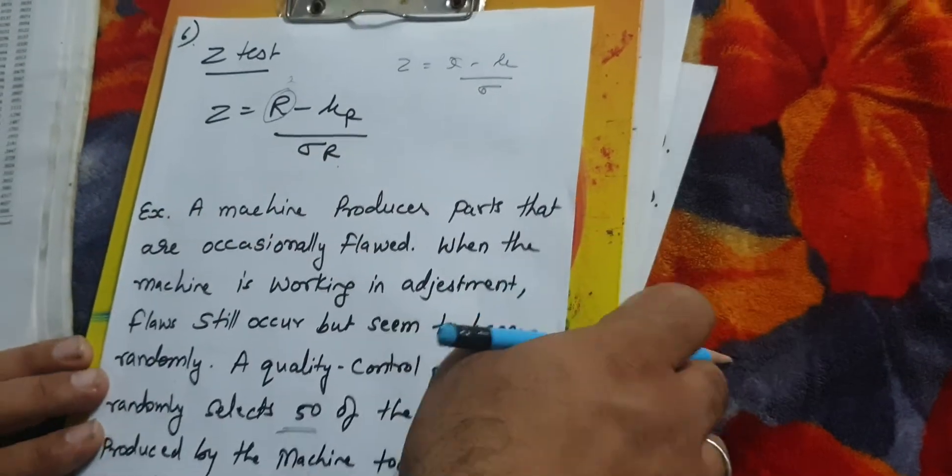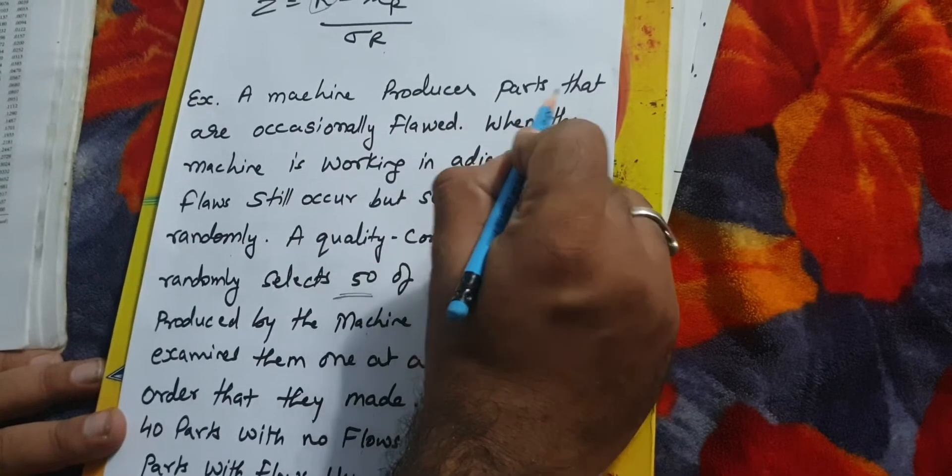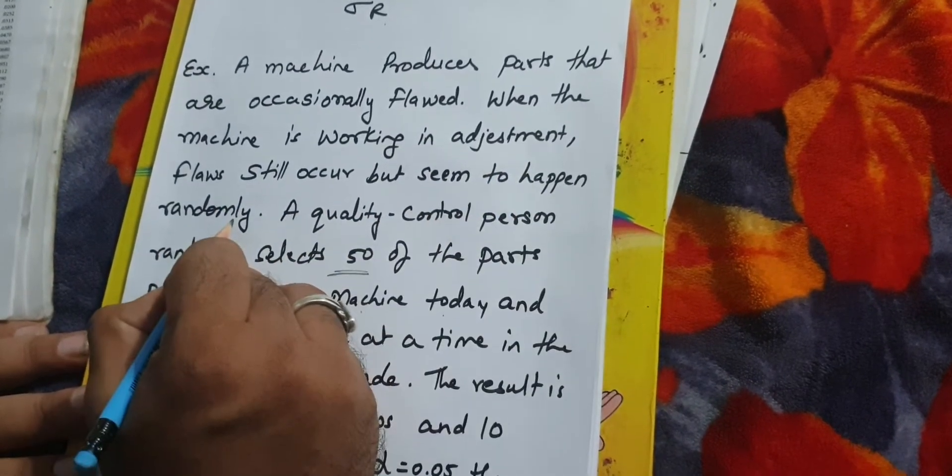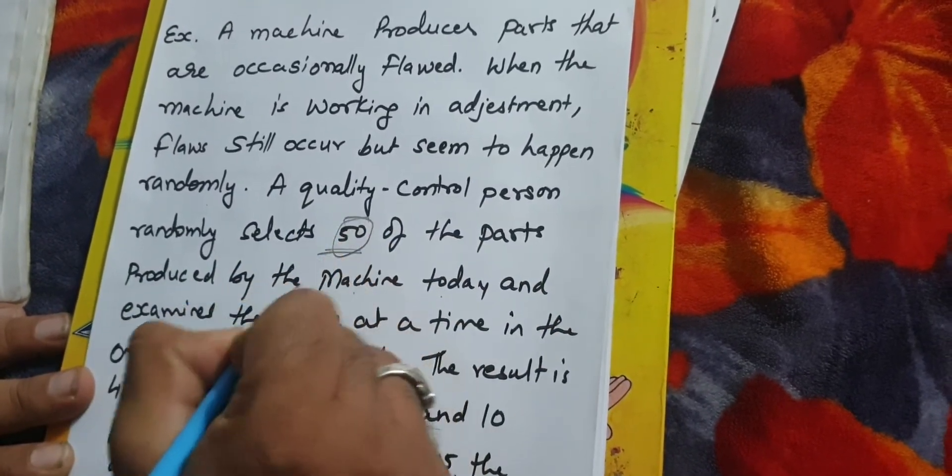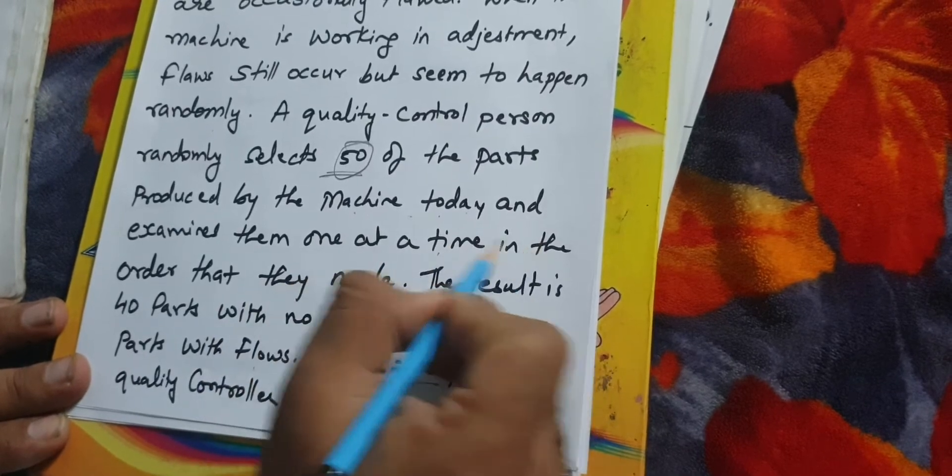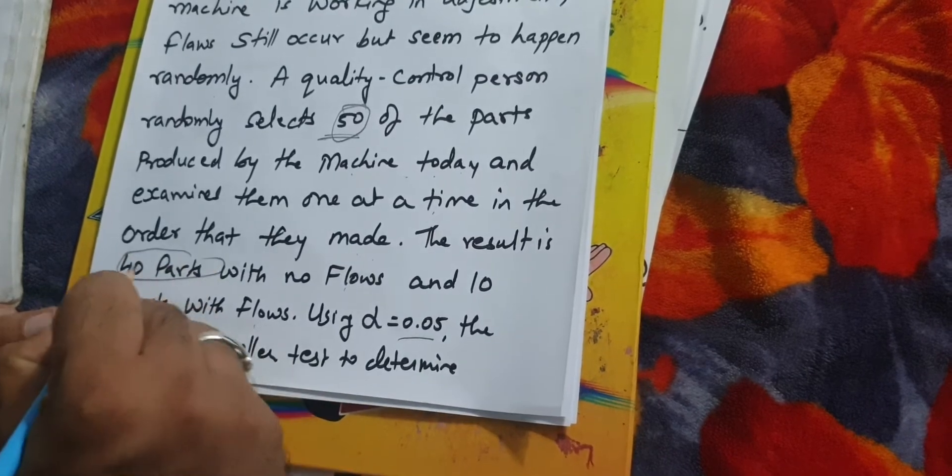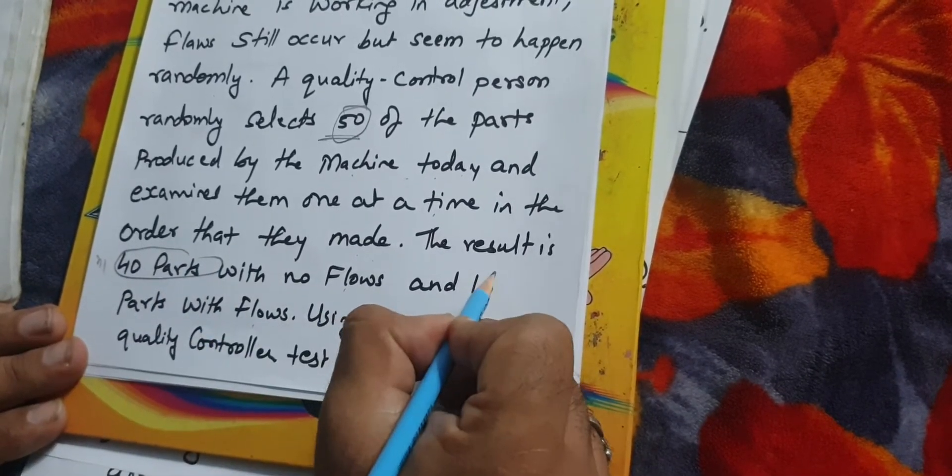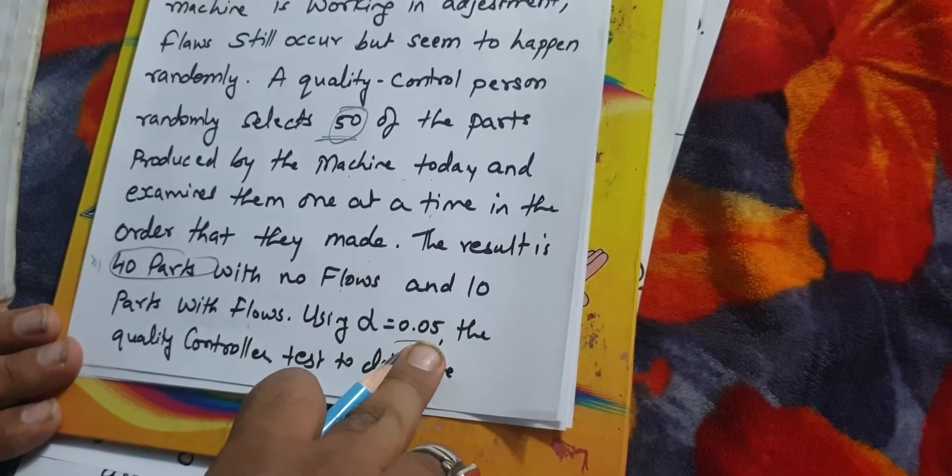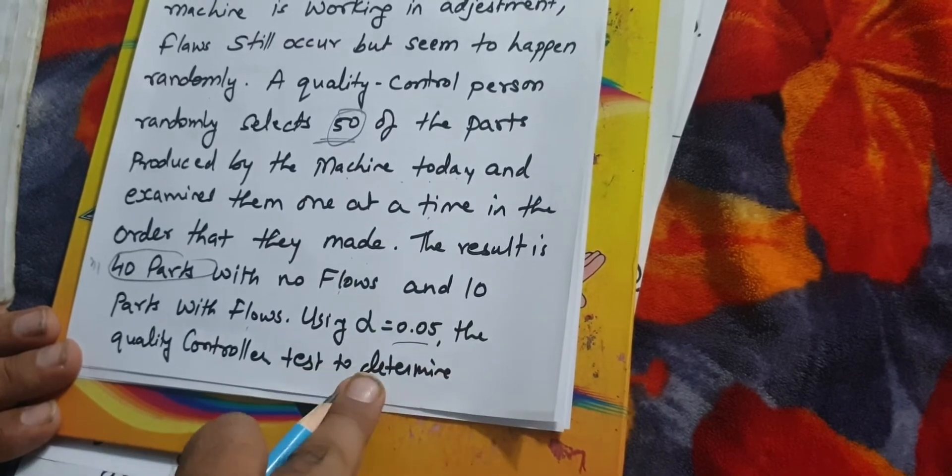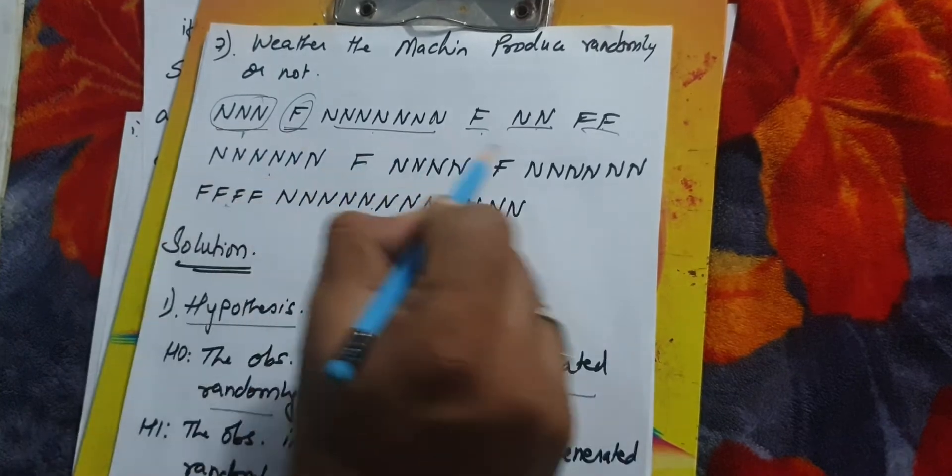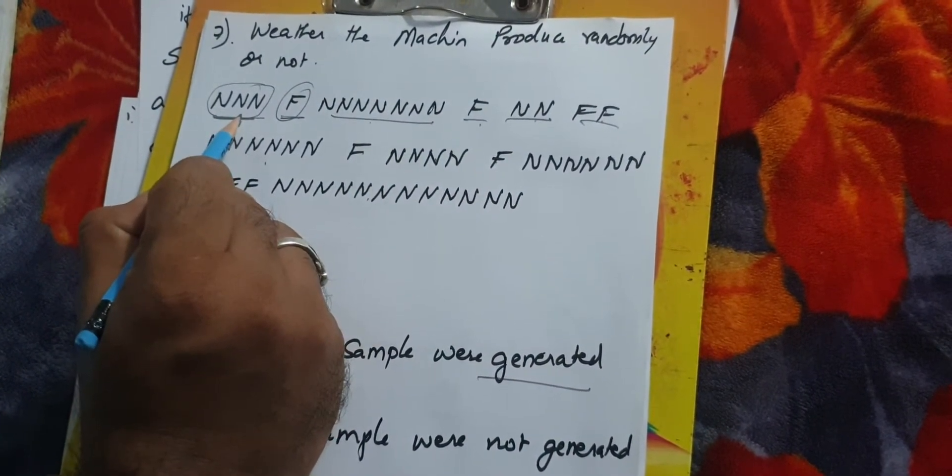Let's see one example. A machine produces parts that are occasionally flawed. When the machine is working in adjustment, flaws still occur but seem to happen randomly. A quality control person randomly selects 50 observations. The result was 40 parts with no flaws and 10 parts with flaws. Using alpha 0.05, the quality controller wants to determine whether the data is random or not.